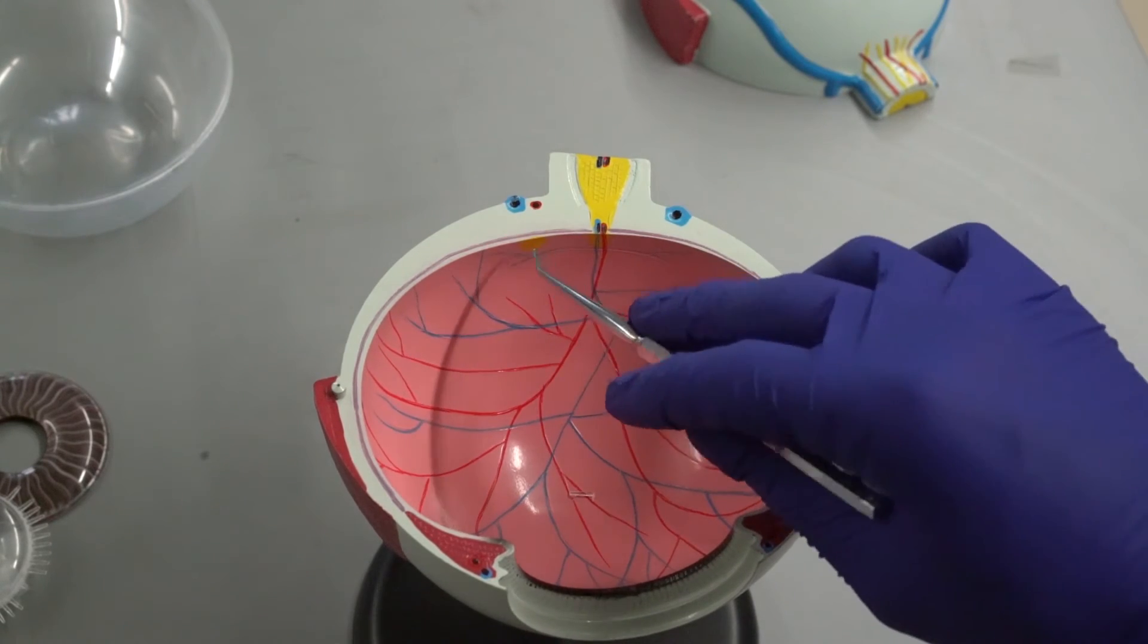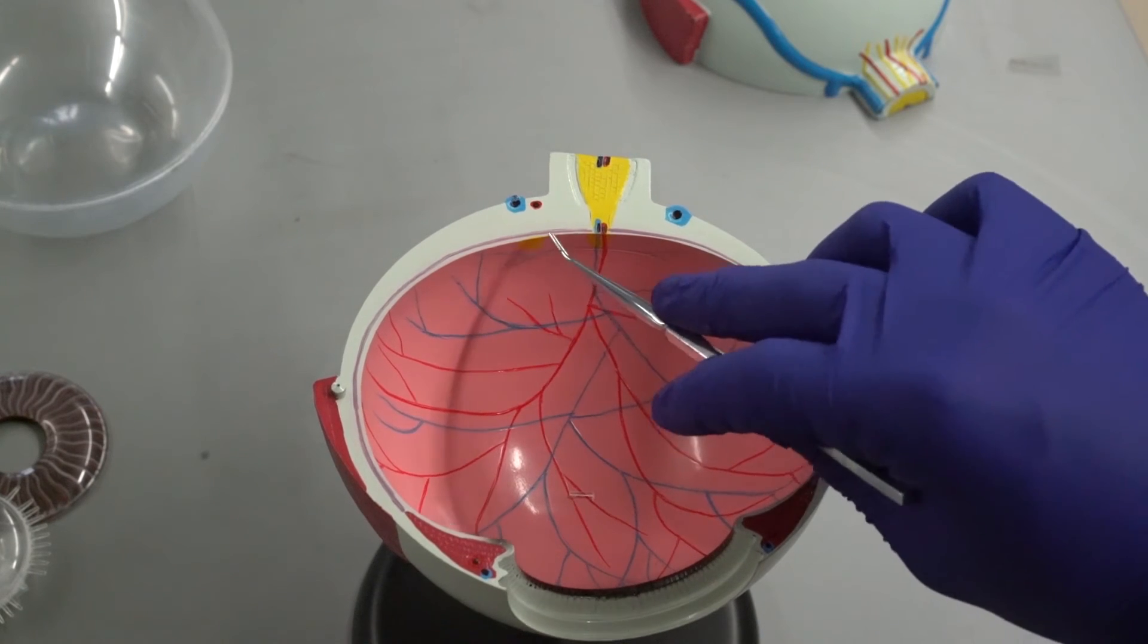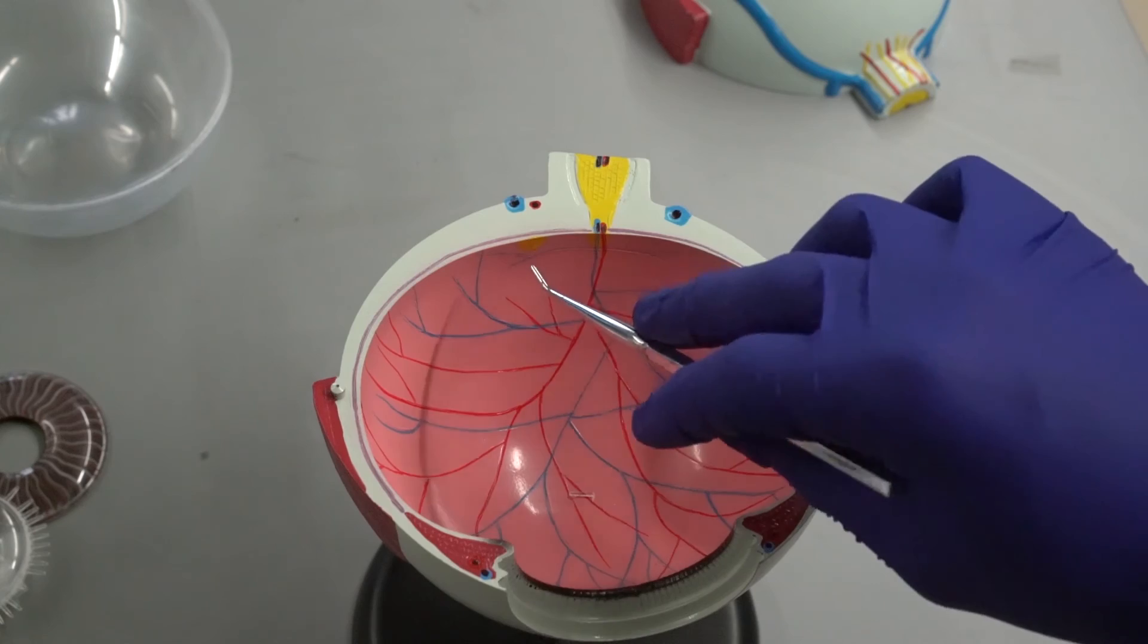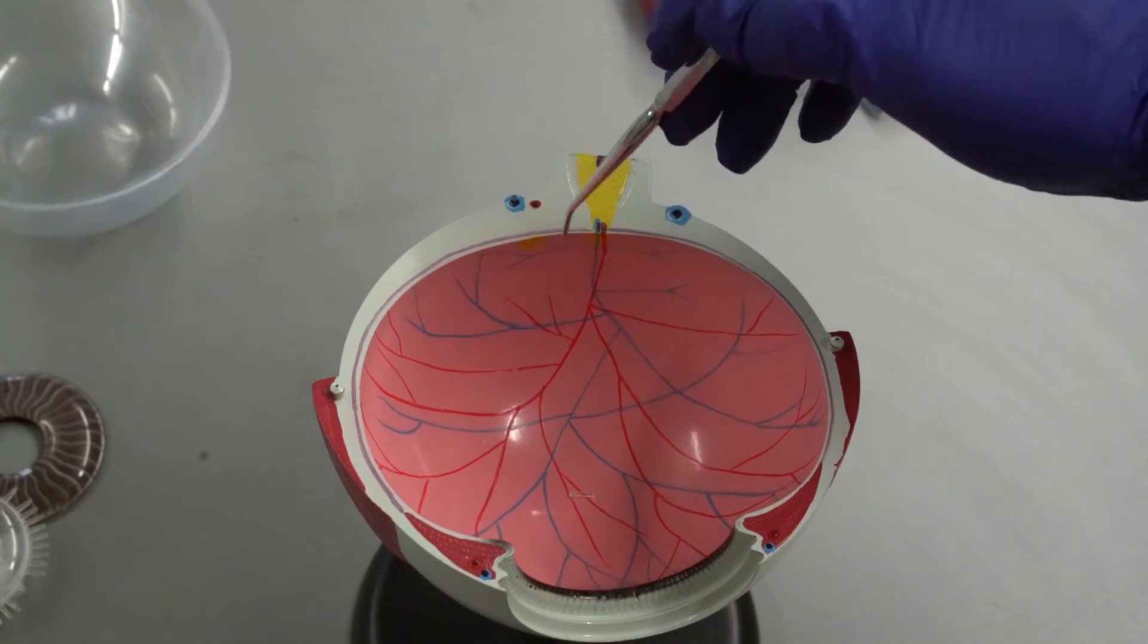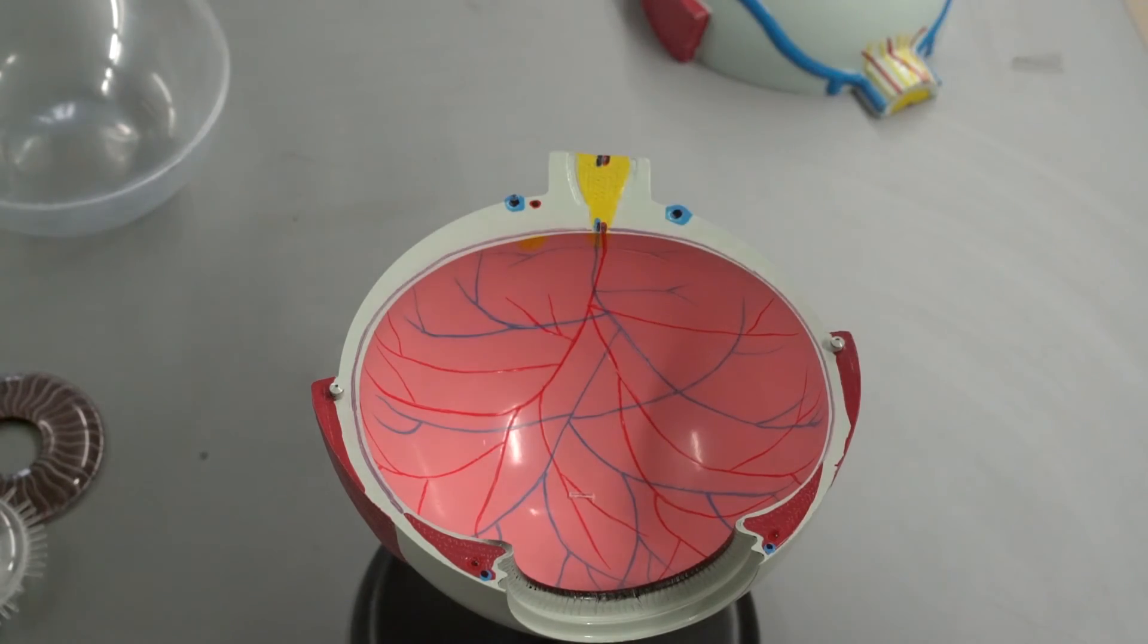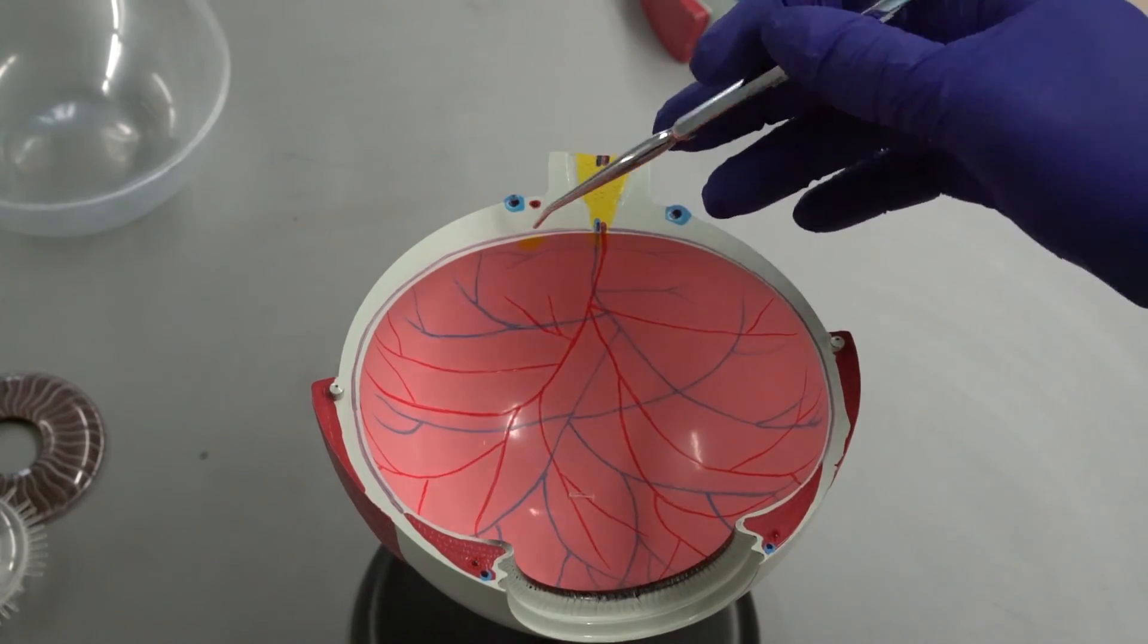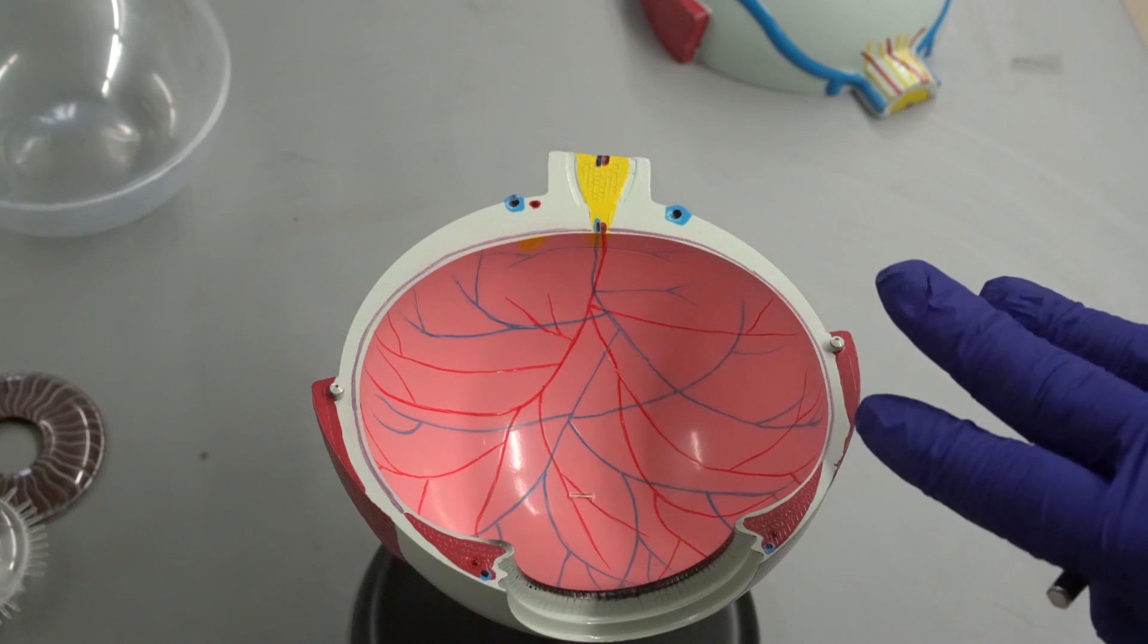Towards this structure right here, this is called your macula lutea. And it's an area that has a very high concentration of cones. This yellow spot right here. And in the center of the macula lutea, you have this pit, this indentation. This is called your fovea centralis. And fovea means pit in Latin, so the central pit. That's what it's translating to. And inside the fovea centralis is nothing but cones. You have no rods in there at all.